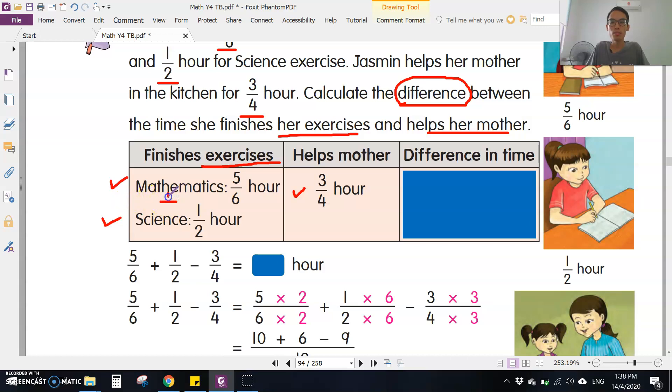You have to add first, because these two are doing homework. Mathematics plus science first: 5/6 plus 1/2, then you minus this one to find the difference.